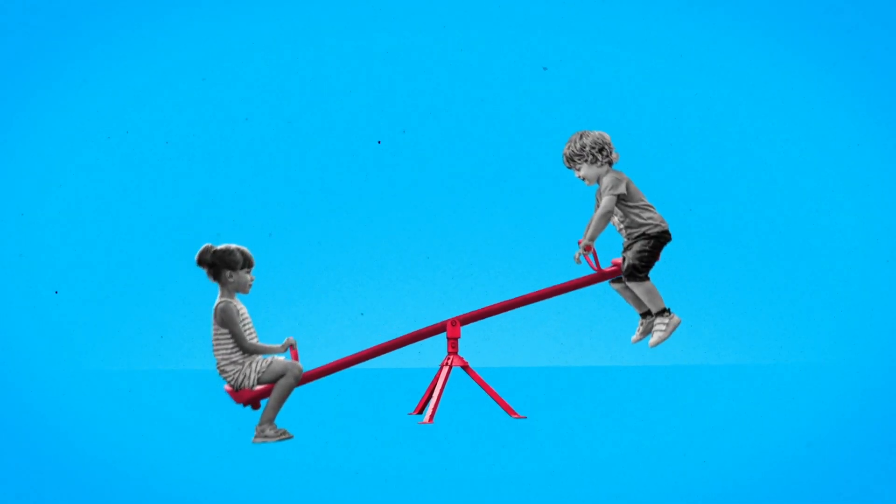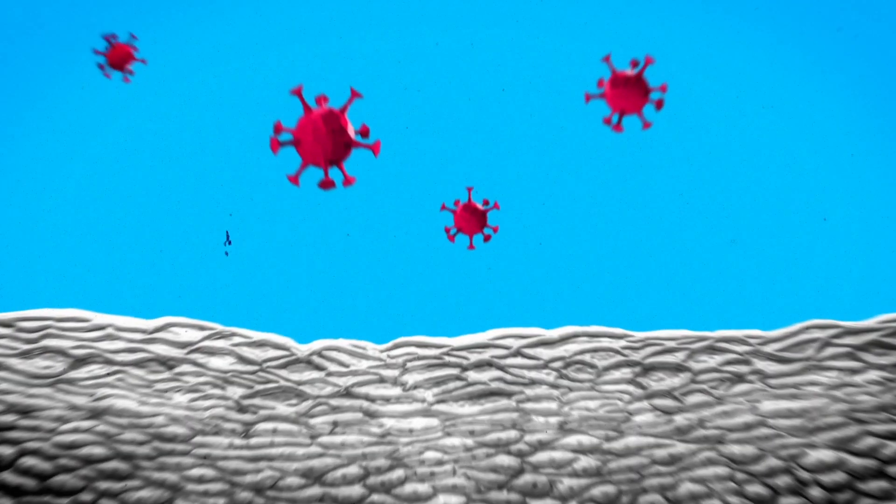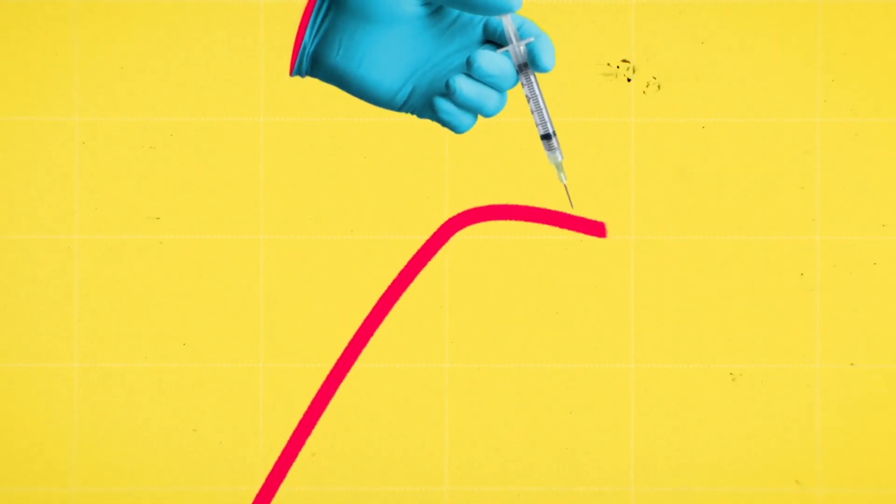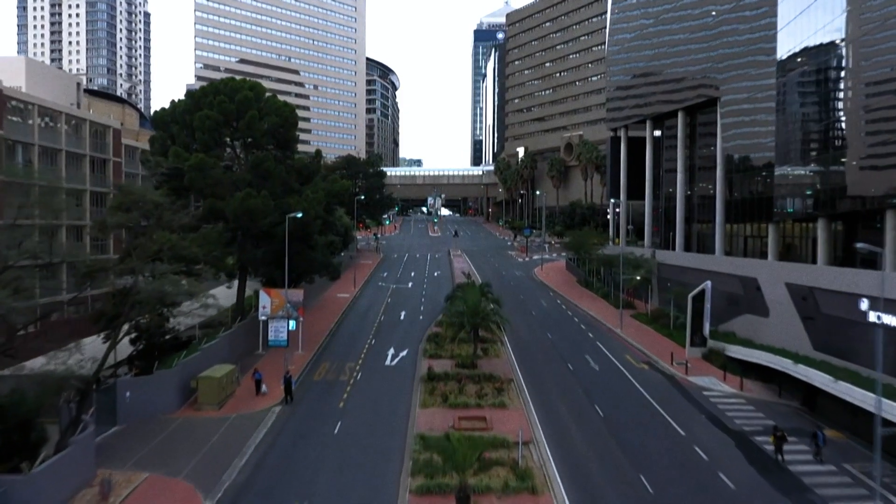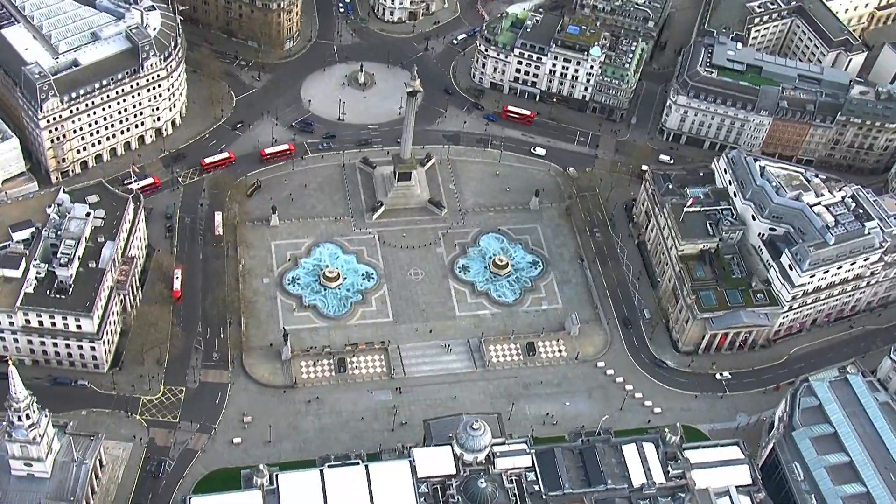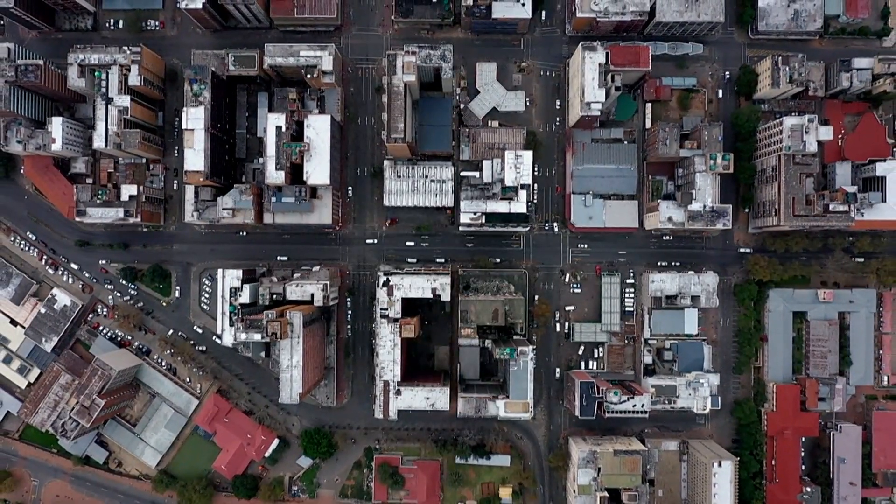But while new infections in many countries are dropping, we aren't yet out of the woods. Once we come out of lockdown, cases could start increasing again. And until we have a vaccine, that threat won't ever go away completely. A second wave of coronavirus could be even worse than the first.